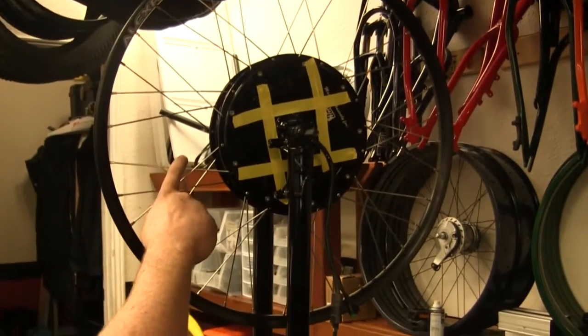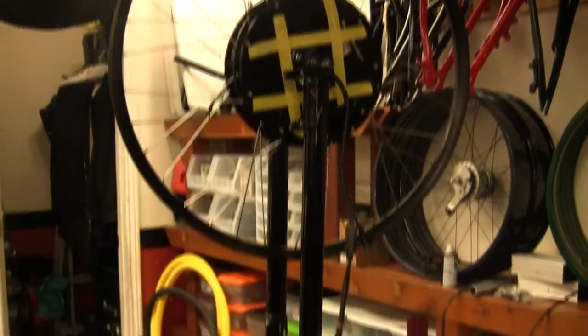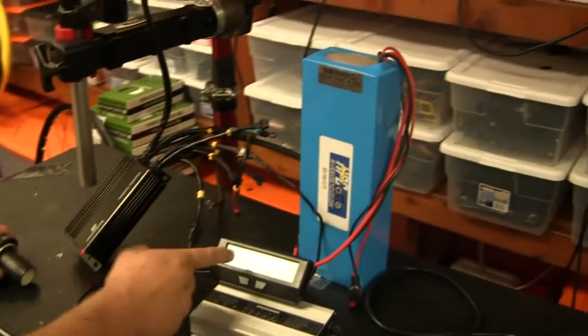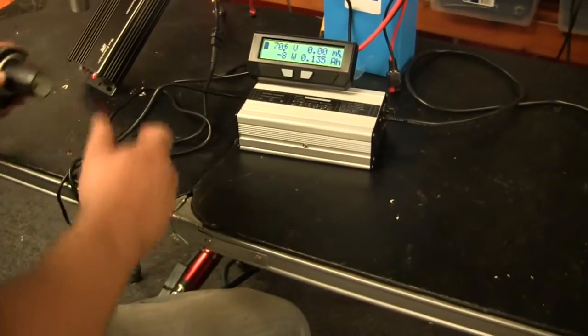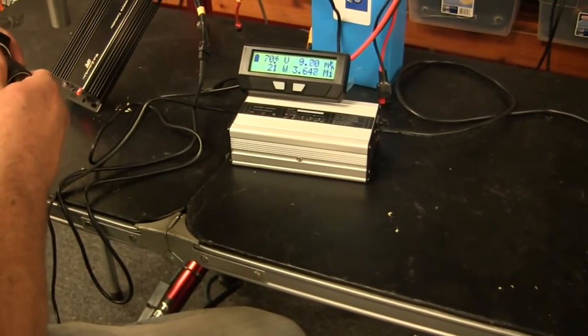Okay, this time we're actually going to run the 5000 watt Stryker motor and see what the top speed is on this 63 volt battery, 70.6 volts, and let's see what she does.